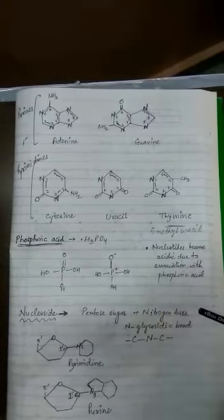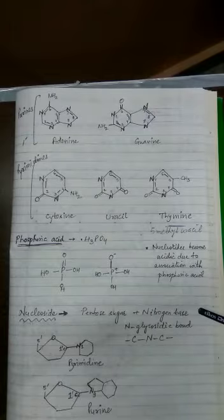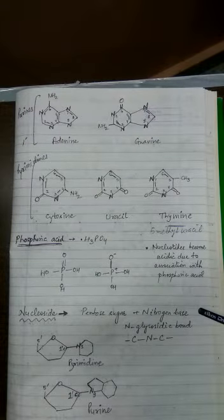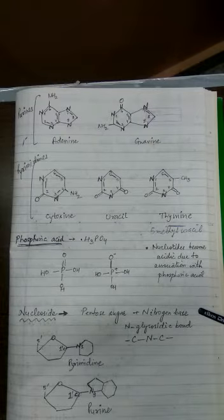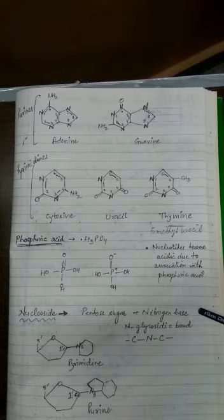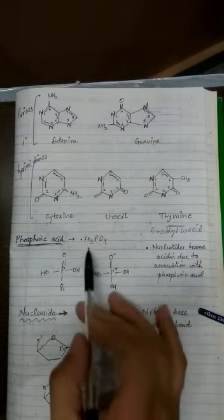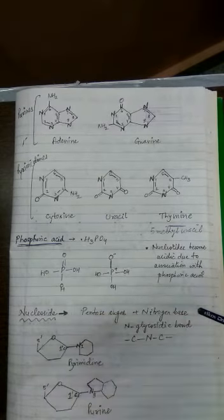So today you have learned two major differences in the chemical structure or structural composition of DNA as well as RNA. The next molecule present in the nucleotide is phosphoric acid, represented as H₃PO₄.